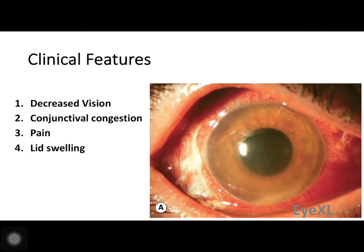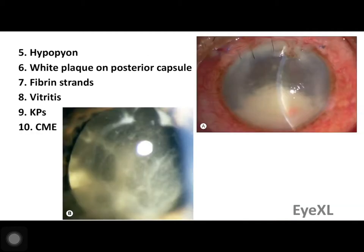Regarding clinical features, the Endophthalmitis Vitrectomy Study identified four classical features: decreased vision, conjunctival congestion, pain, and lid swelling — one or more of these will be present. Additional features that may or may not be present include hypopyon, white plaque on the posterior capsule, fibrin strands, vitritis, keratic precipitates, and cystoid macular edema. The pattern depends on which part of the eyeball is affected.